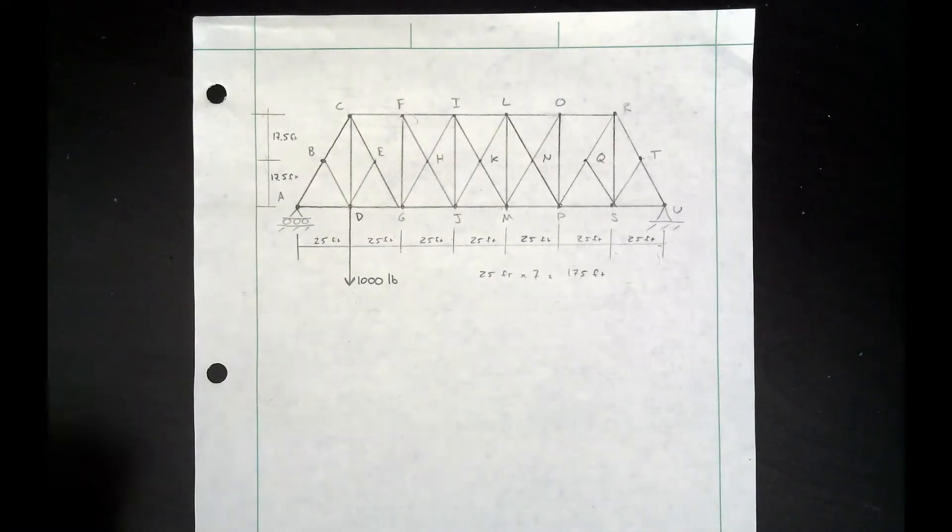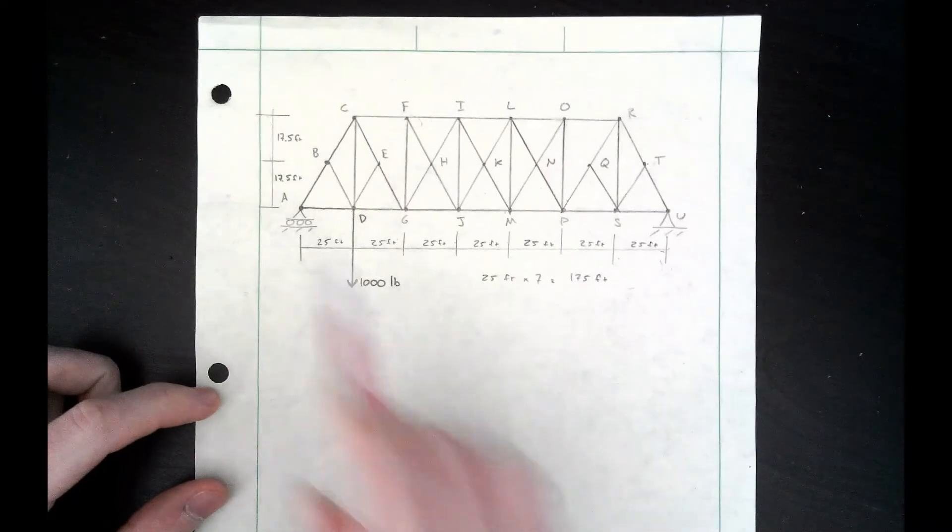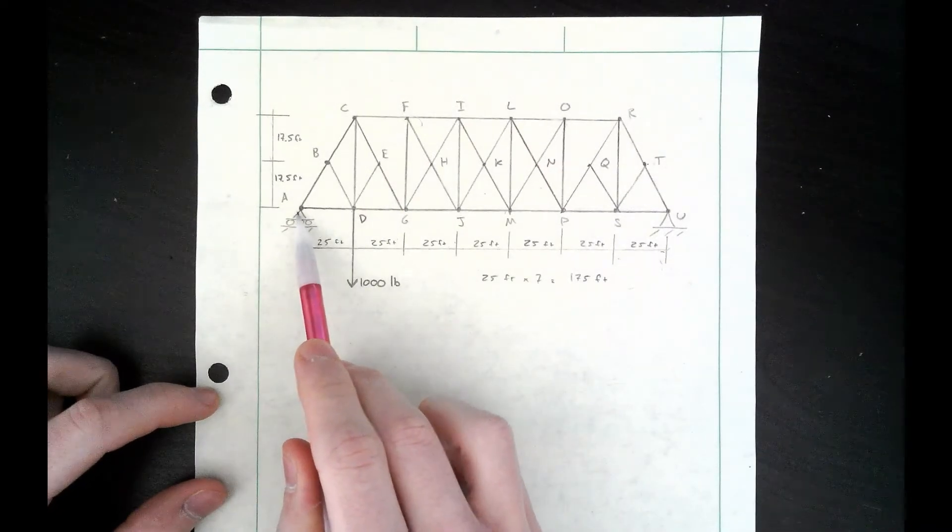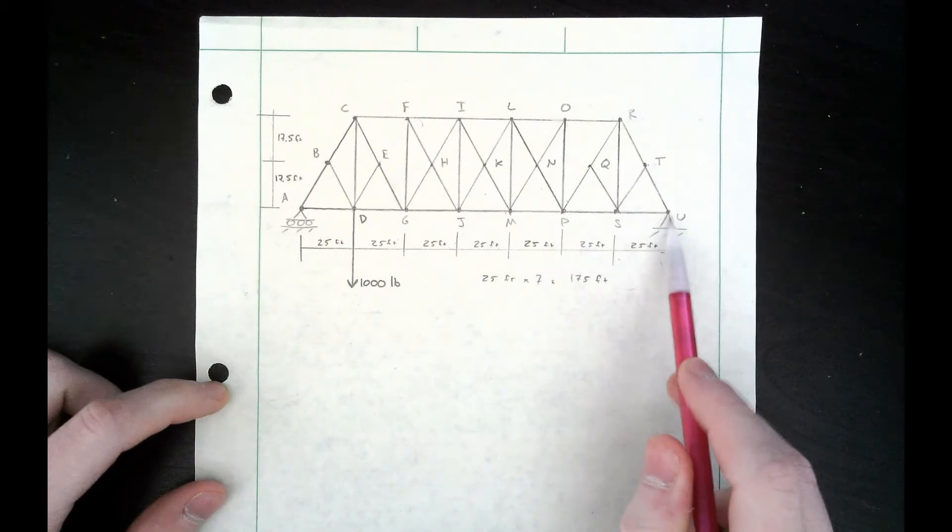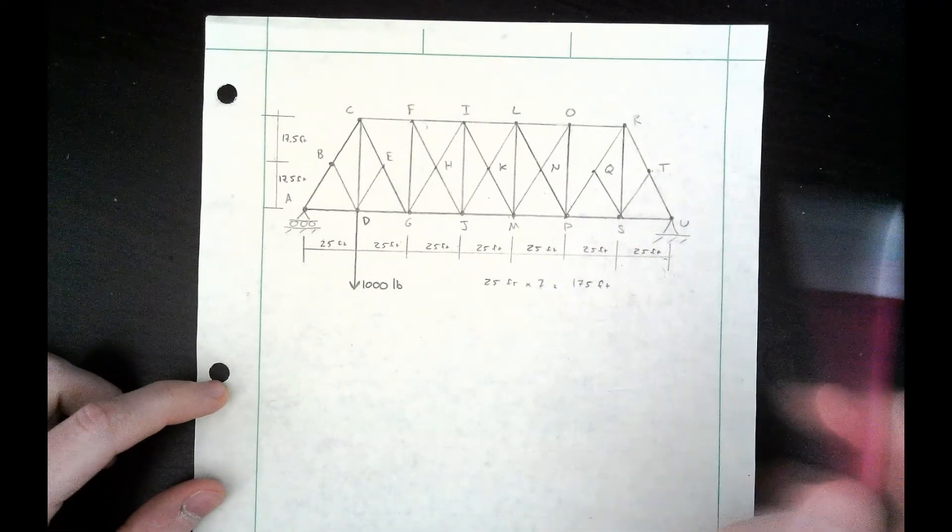Here we've made a simple drawing of the bridge. We have a roller at A, so it provides an upward reaction force, and we have a pin at U, so it provides an upward and sideways reaction force.